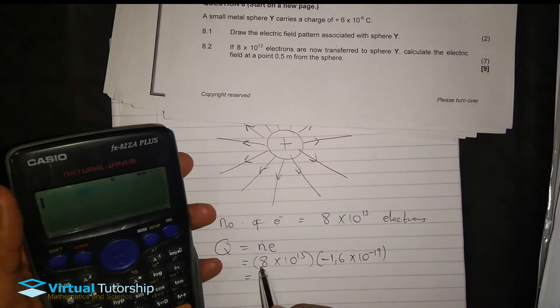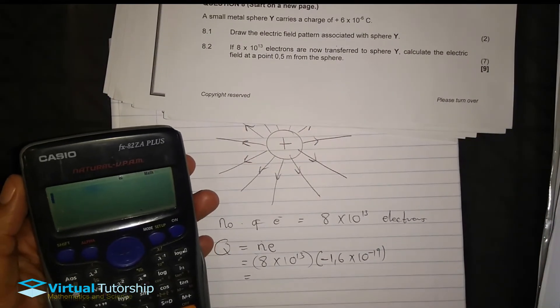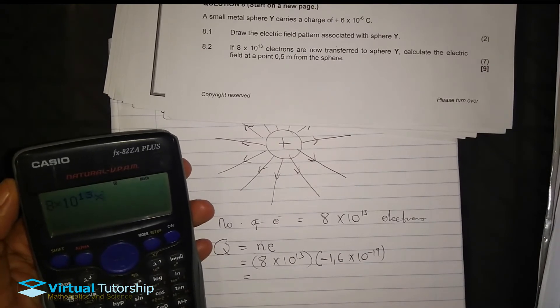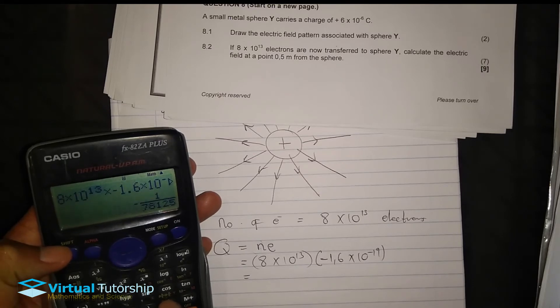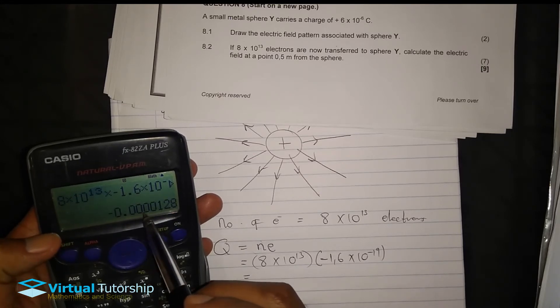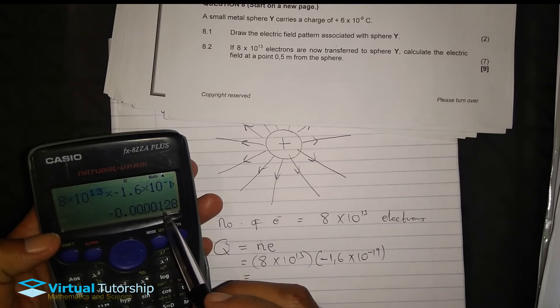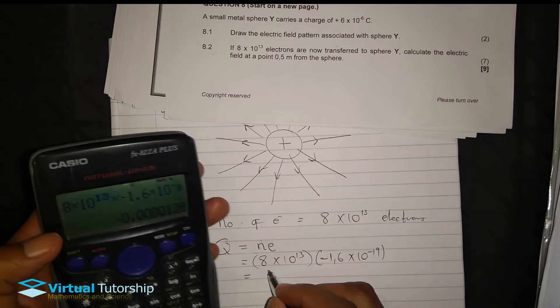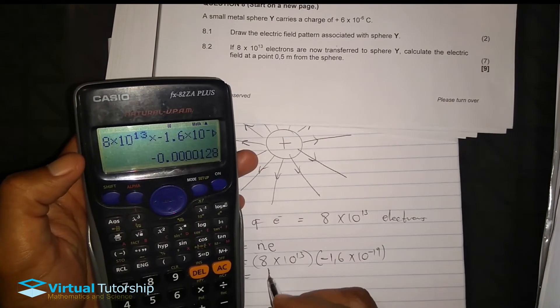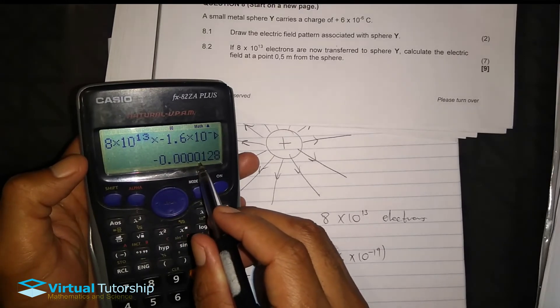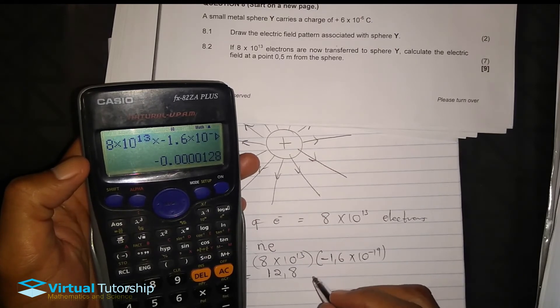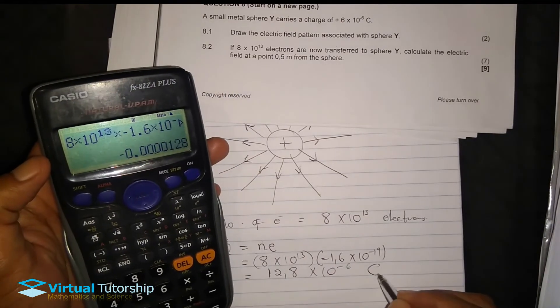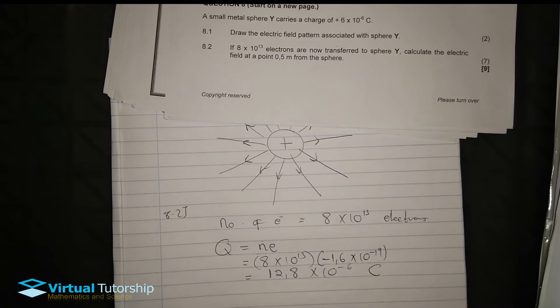So, it's minus 1.6 times 10 exponent minus 19. So therefore, the electrons and the charge. In this way, by multiplying, exponent minus 19. Answer. Scientific notation. Okay. So, 1, 2, 3, 4, 5. 5. Right. 5, 4. 1, 2, 3, 4, 5, 6. Even to 1 decimal. So, it is 12.8 times 10 exponent minus 6 coulombs. Minus 6 coulombs.